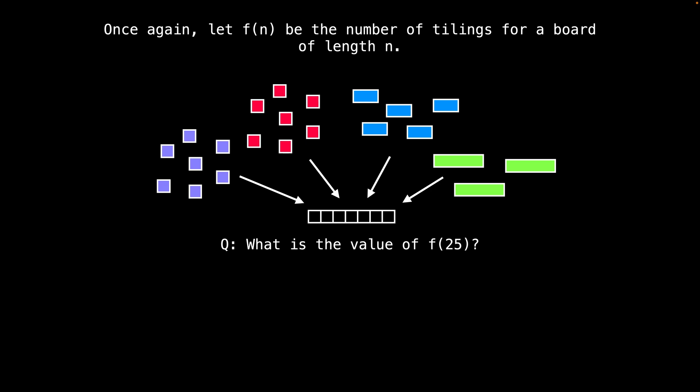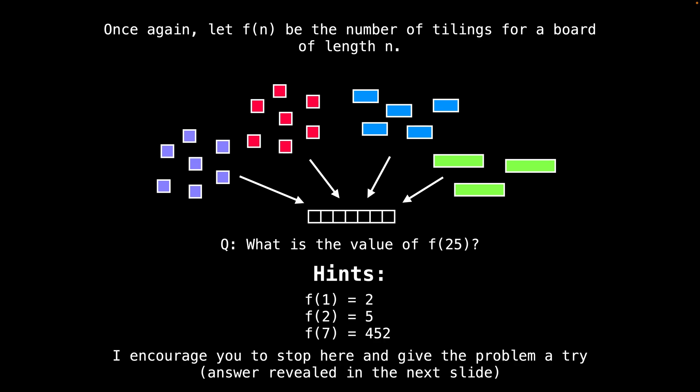Let's define the function f(n) to be the number of tilings for a board of length n. My question for you is, what is the value of f(25)? That is, how many ways are there to tile a board of length 25 with the tiles displayed on this screen? I'll give you a moment to think about it. But here are a few hints to get you started: f(1) = 2, f(2) = 5, and f(7) = 452. I encourage you to pause the video here and give the problem a try.